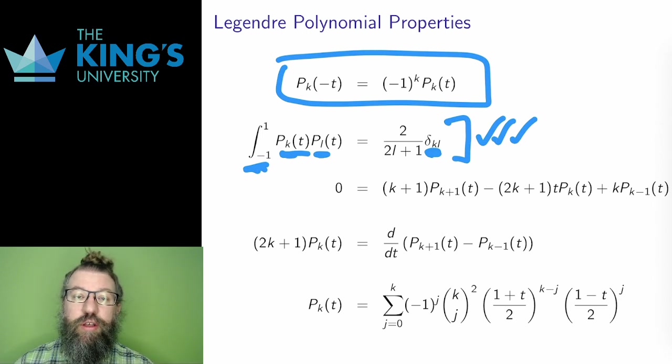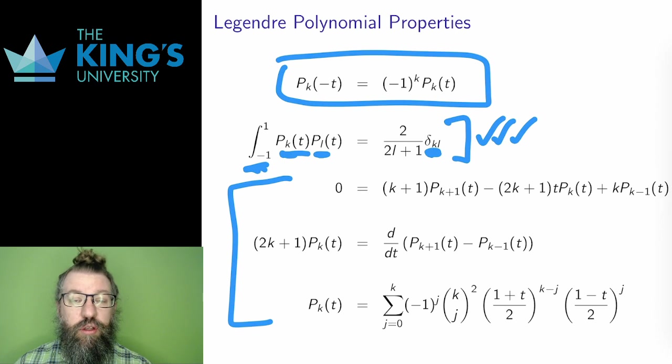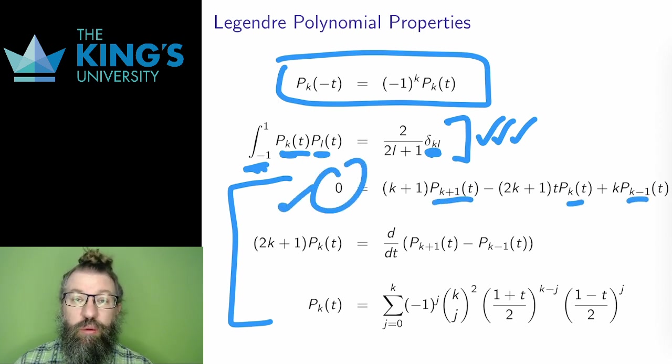The next three equations are just strange curiosities that mathematicians have discovered. They talk about the weird ways that the functions combine. A strange combination of three consecutive Legendre polynomials all cancel out. A Legendre polynomial somehow related to the derivative of the polynomials one above and one below. And finally, for those who know about binomial coefficients, there is a strange way to relate Legendre polynomials to binomial coefficients.